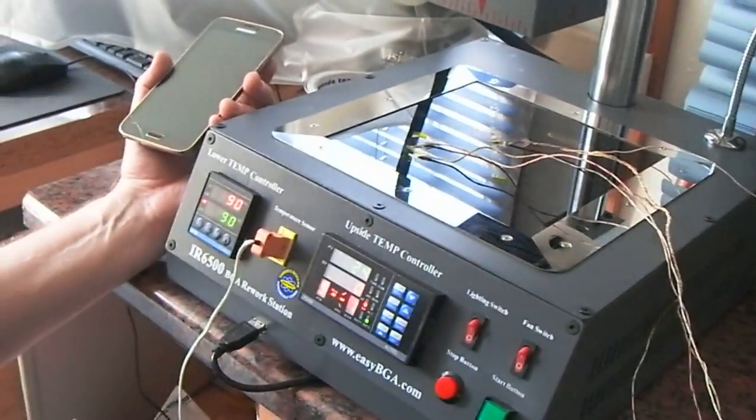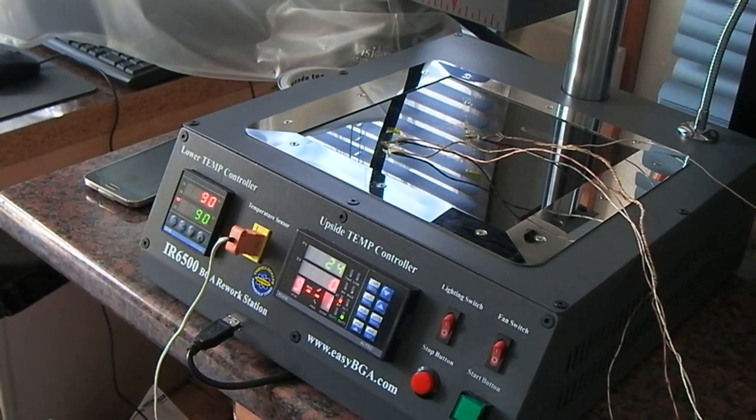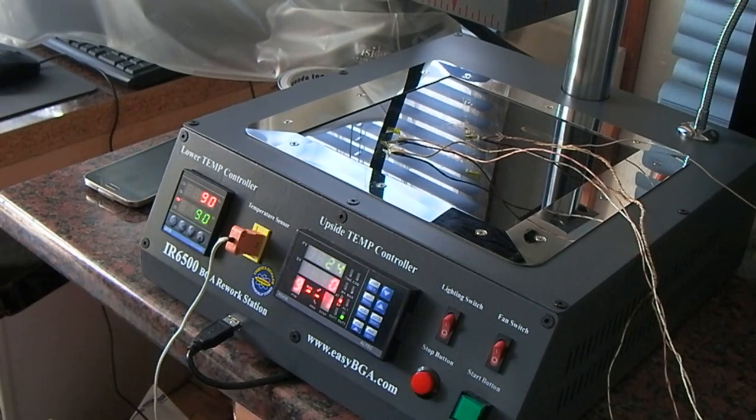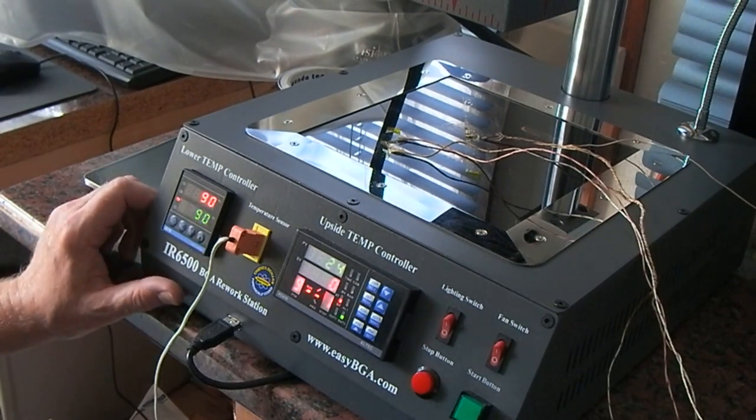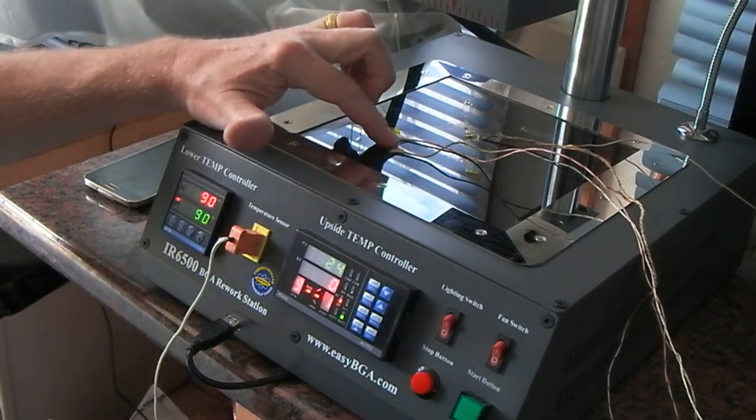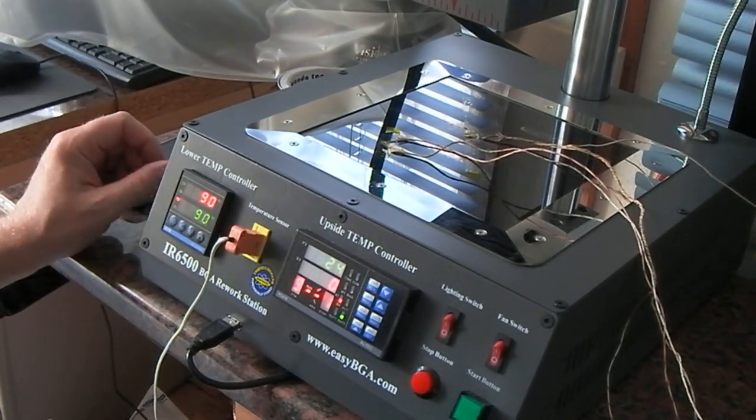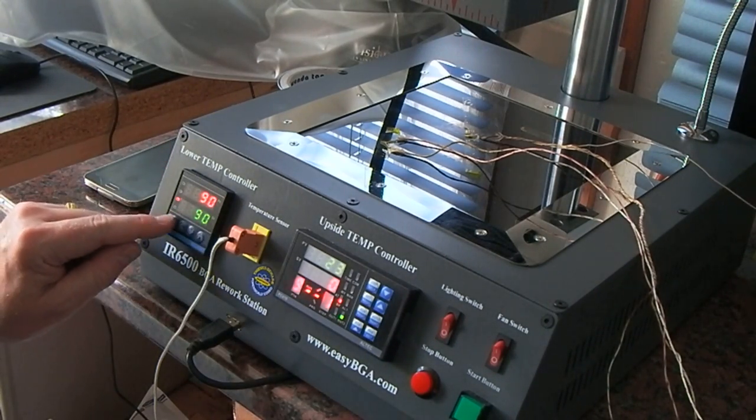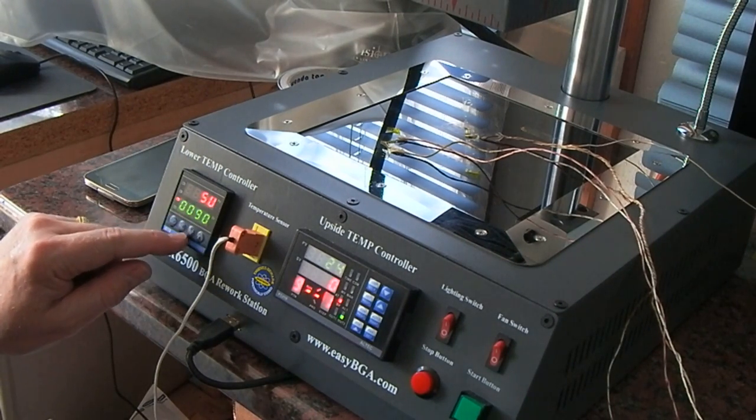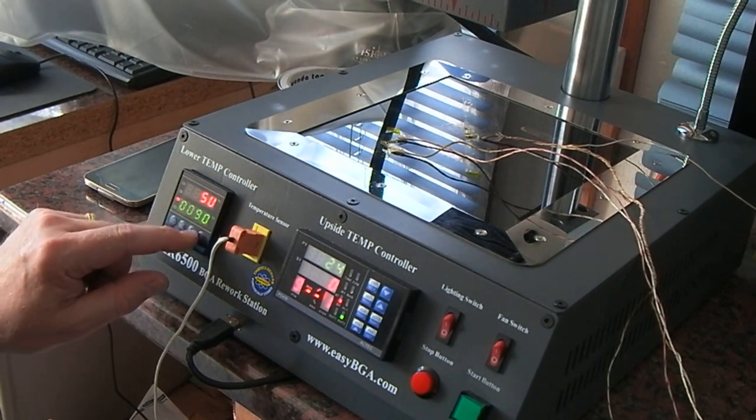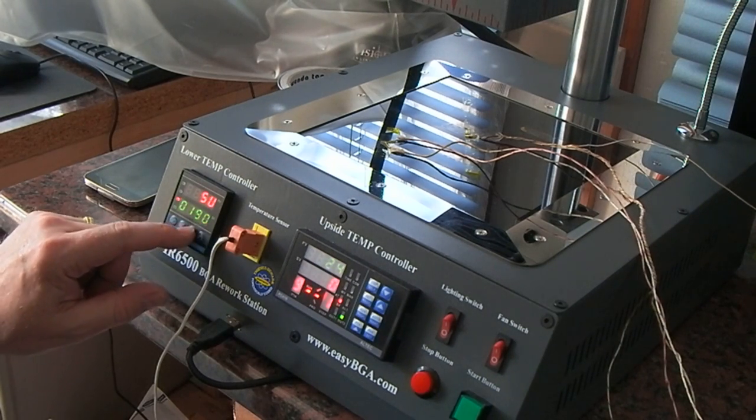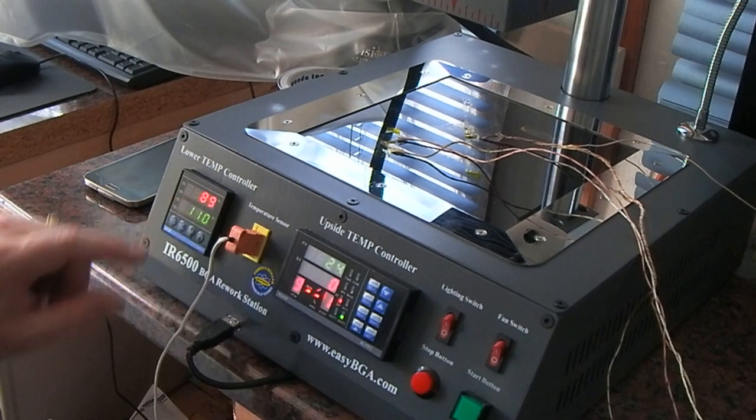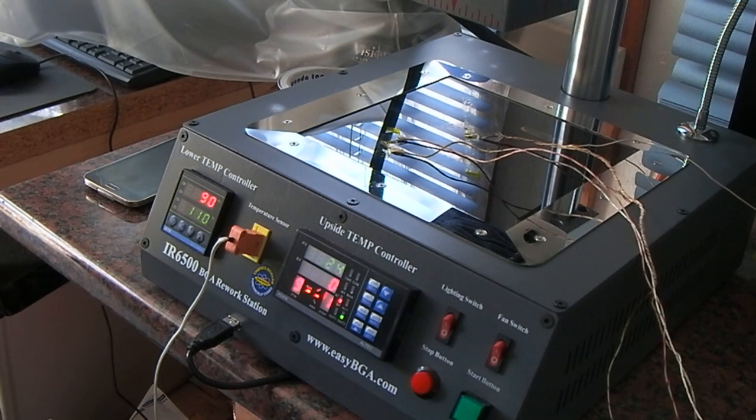We're a few degrees shy of where we need to be, so what I'm going to do is bump this approach value up until we get the desired temperature on these K-type thermocouples. Looking at these, I'm going to bump it up another 20 degrees to 110 and see what difference that makes.